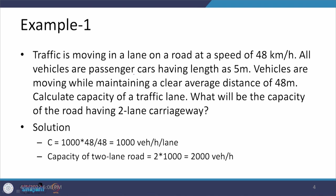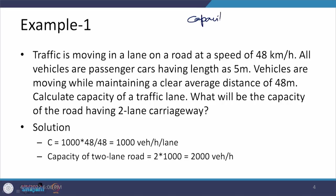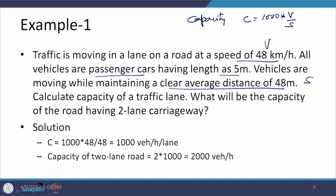Before starting the new factors, let us revisit capacity from the previous lecture. Capacity is defined as 1000 times V divided by s. Here is one example where traffic is moving at a speed of 48 kilometers per hour. All vehicles are passenger cars with an average length of 5 meters and they maintain a clear average distance of 48 meters. We need to calculate the capacity of a traffic lane. Putting these values into the formula gives us 1000 vehicles per hour per lane.